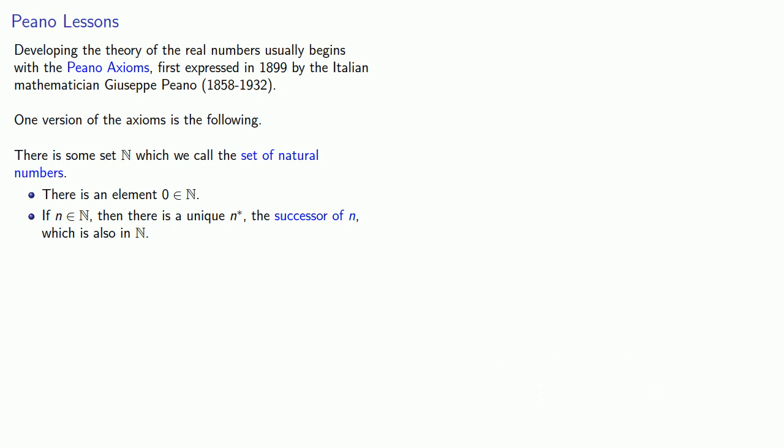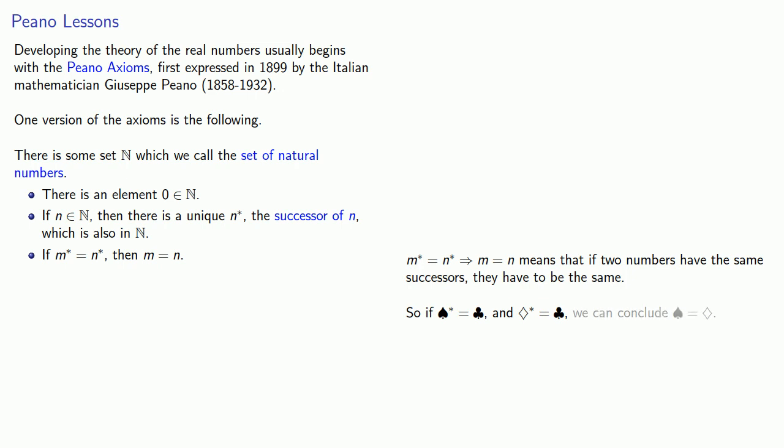The third axiom: if m* equals n*, then m is equal to n. And what this means is that if two numbers have the same successors, they have to be the same. So if spade* equals club and diamond* equals club as well, we can conclude that spade is equal to diamond.